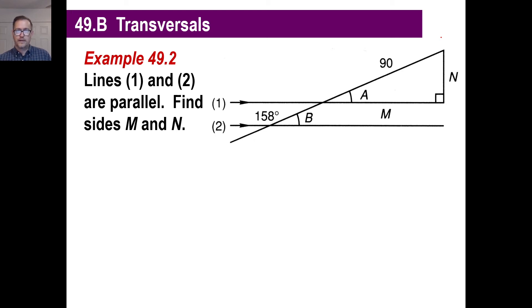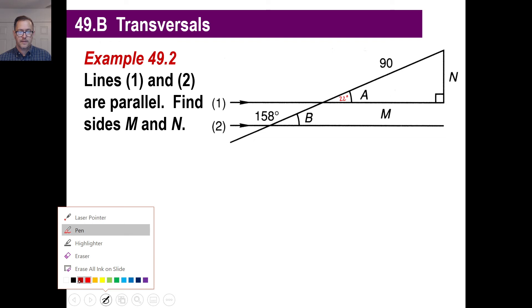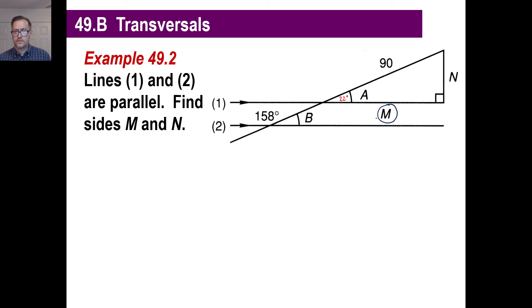Well, look at angle B. That's what we need to figure out first. Because we're going to have to figure out what angle A is. To do that, we're going to have to figure out what angle B is because it matches exactly what angle A is. Well, B is obviously 180 degrees minus 158, which is going to be 22. Well, if that's 22, then A is 22 degrees.